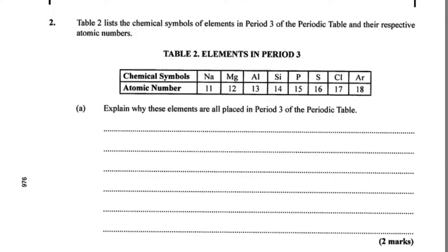Table 2 lists the chemical symbols of elements in Period 3 of the Periodic Table and their respective atomic numbers. We're seeing sodium, magnesium, aluminum, silicon, phosphorus, sulfur, chlorine, argon, 11 to 18. Part A: Explain why these elements are all placed in Period 3 of the Periodic Table.